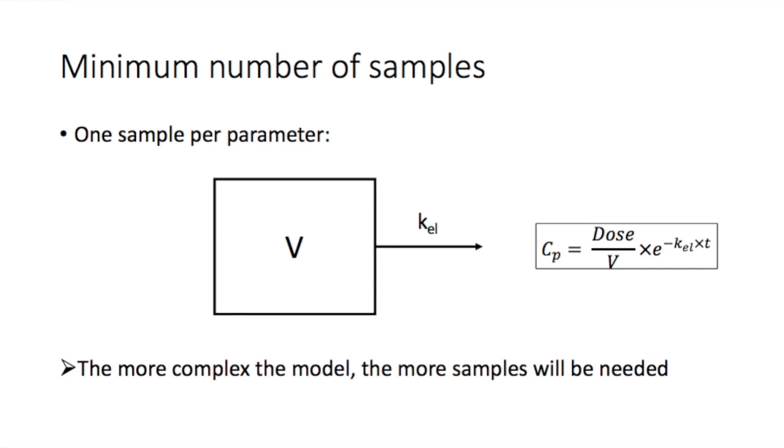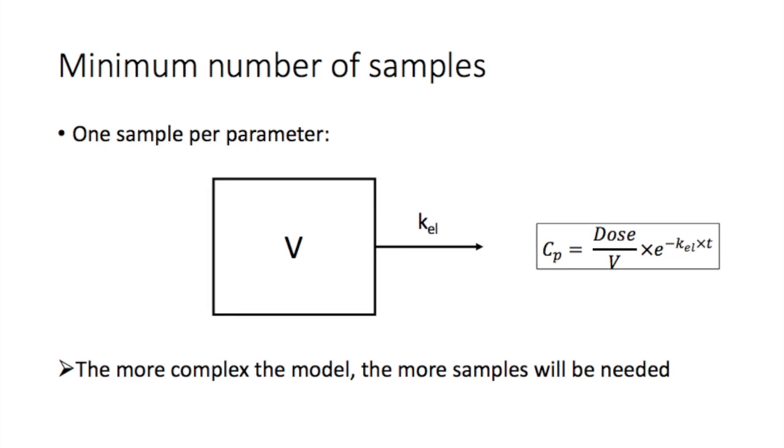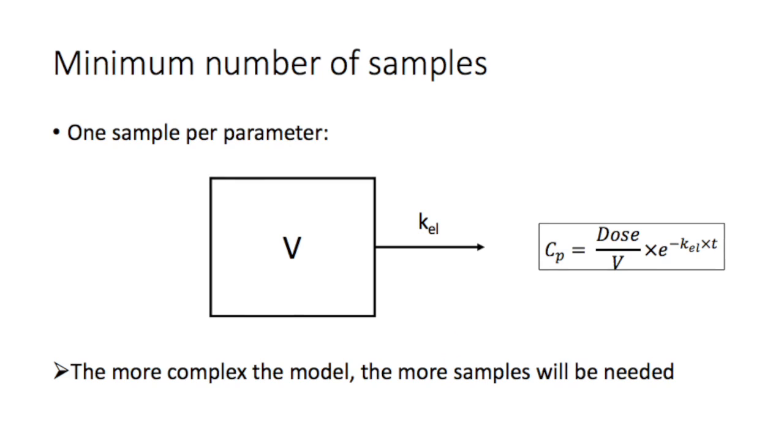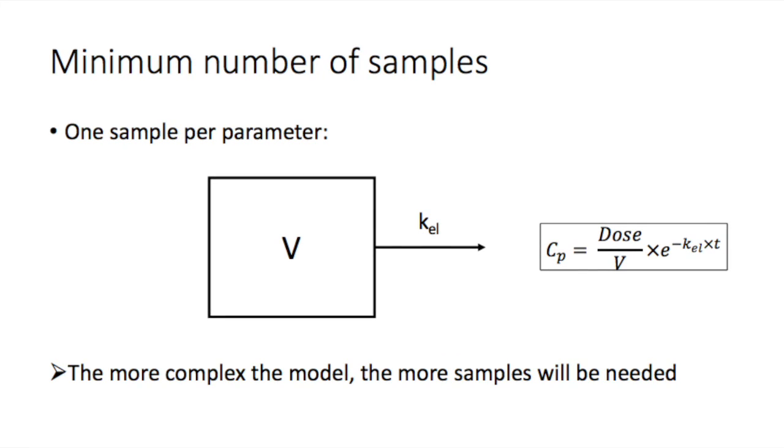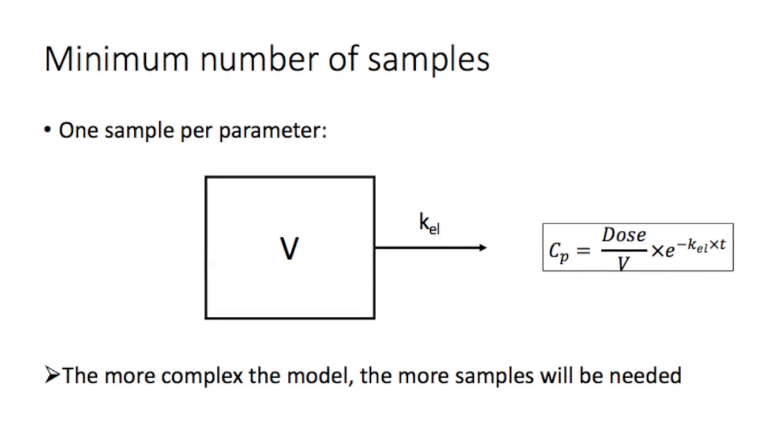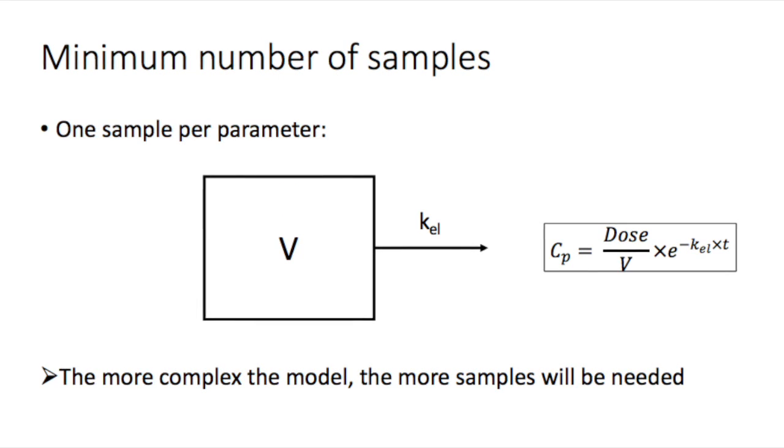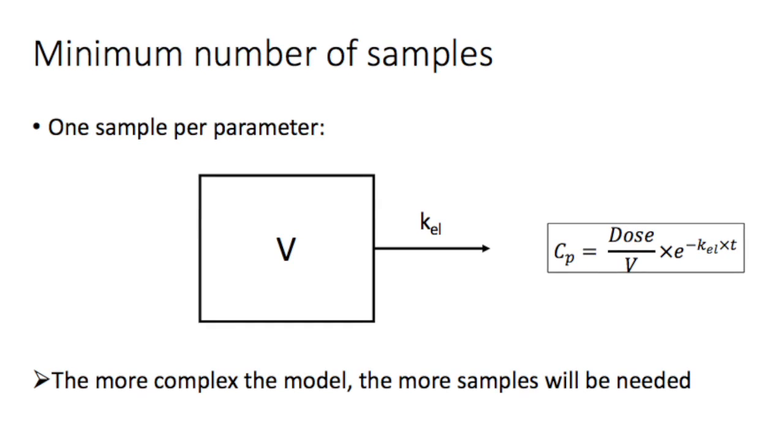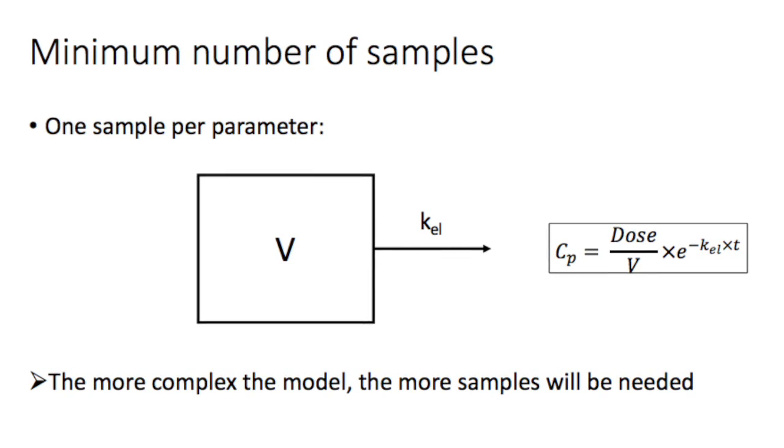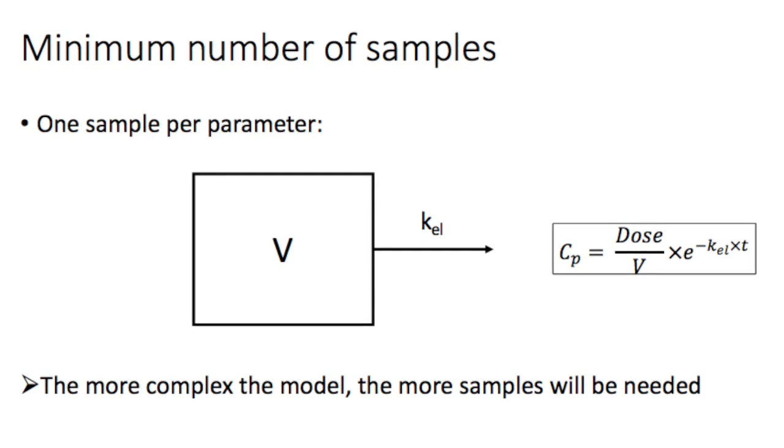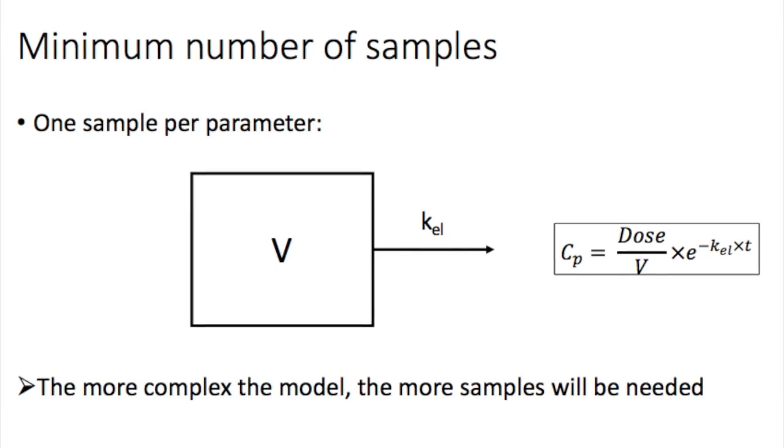At the very minimum, you need one blood sample for each parameter in the model you plan to fit to the data. So for a simple one-compartment model with first-order elimination following intravenous administration, you have two parameters, the K-elimination and the Volume of Distribution, which means that you need at least two blood samples. This assumes that you already know that a one-compartment model is the best fit for the pharmacokinetics of that drug.